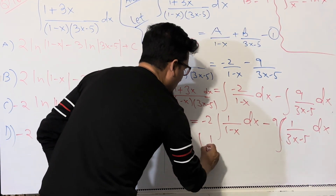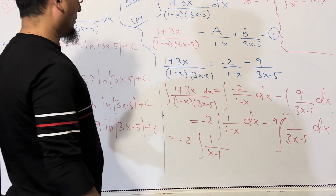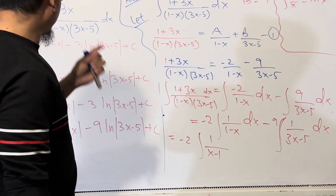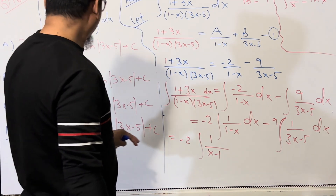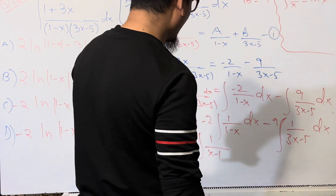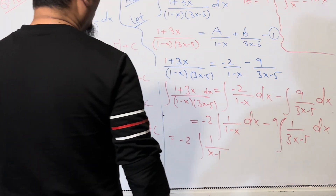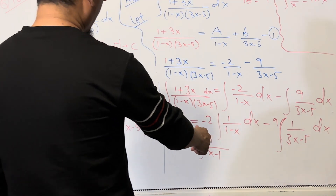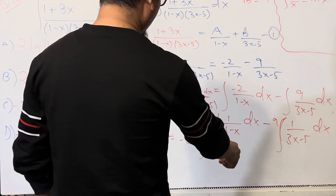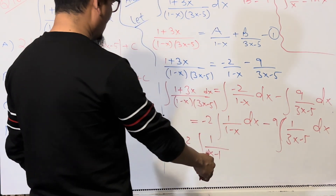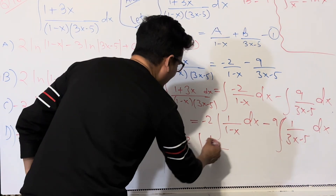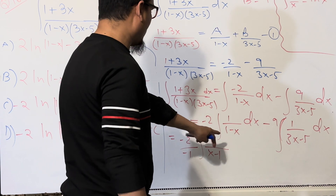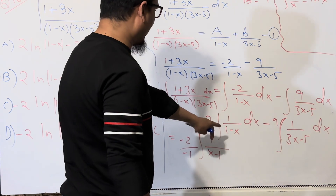For the integral of 1/(1 - x) dx: let t = 1 - x, so -dx = dt, meaning dx = -dt.